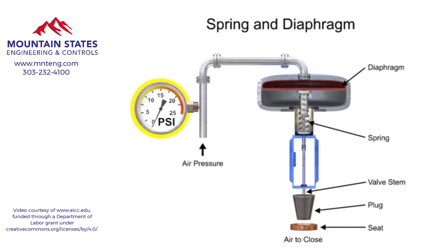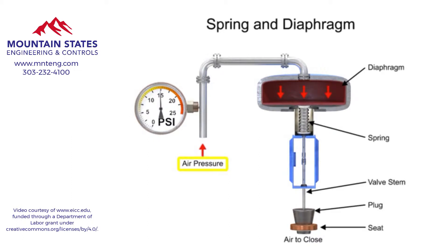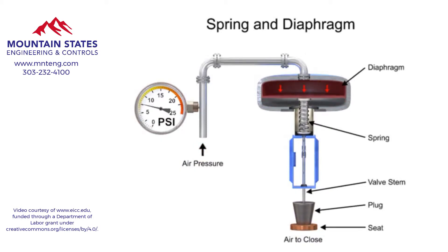A 15 PSI pneumatic signal enters the housing at the top of the actuator. As pressure is exerted on the diaphragm, a downward force is applied against the spring which moves the restrictor. The diaphragm moves until it creates an equal but opposing force against the spring, at which time the motion stops as the plug meets the valve seat. With no air pressure, the restrictor is pushed upward by the spring to act as a normally open control valve.